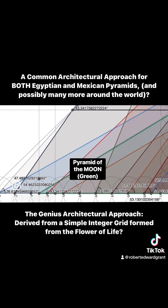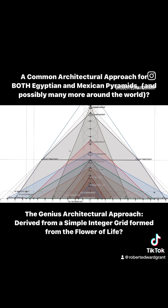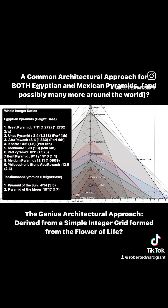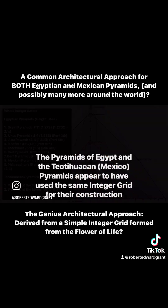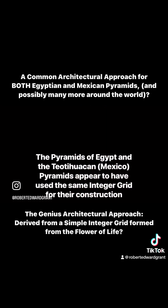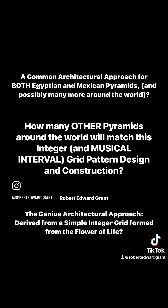So we have Khufu, Khafre, Menkaure — all the Giza Plateau Pyramids — the Dashur Pyramids, the Mexico Pyramids, Meidum, and the Abu Rawash Pyramids, all matching the same grid pattern. The Pyramids of Egypt and Teotihuacan Mexico Pyramids appear to match the integer grid. How many other pyramids around the world will match this grid pattern?